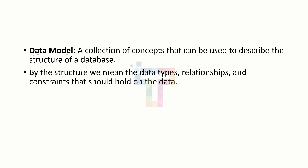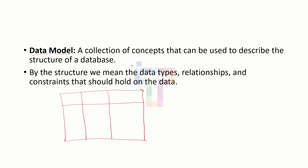Data model is a collection of concepts that can be used to describe the structure of a database. As we have discussed in earlier classes, every database has some structure. For example, if you have a movie database you want to create, you have to create one structure. Every table has — as we have discussed — we are using relational DBMS, RDBMS.